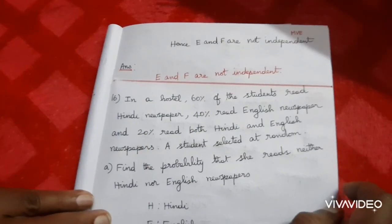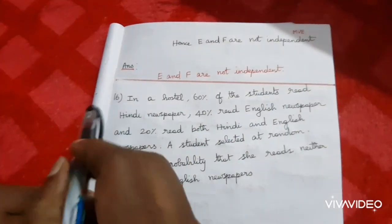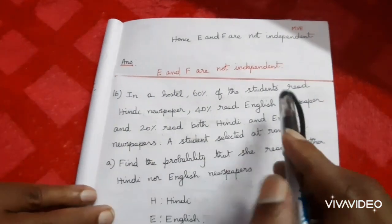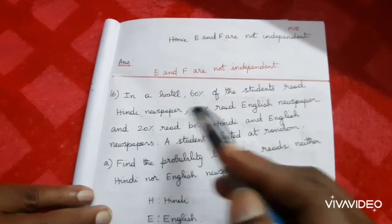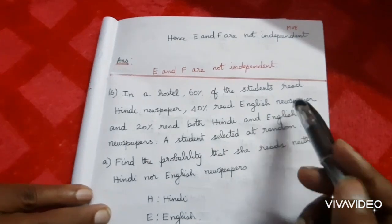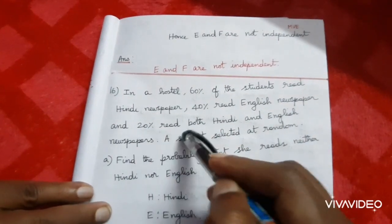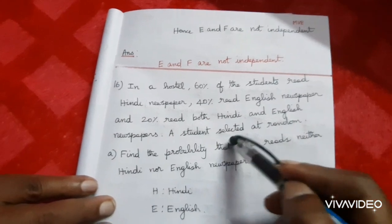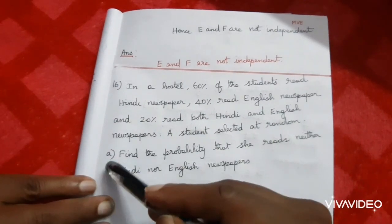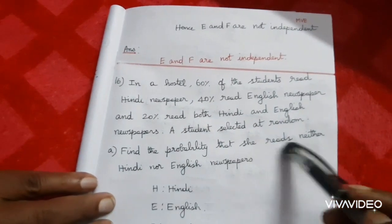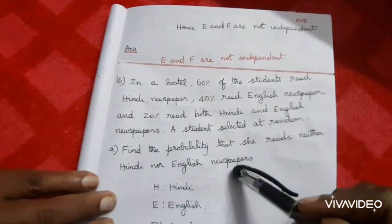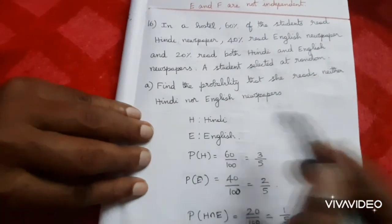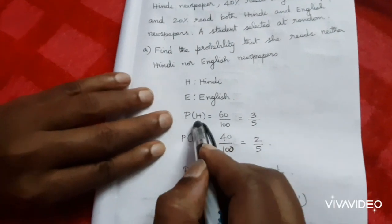Welcome to Maths Very Easy. In a hostel, 60% of the students read Hindi newspaper, 40% read English newspaper, and 20% read both Hindi and English newspapers. A student is selected at random. Let H be Hindi and E be English. Find the probability that she reads neither Hindi nor English newspaper.